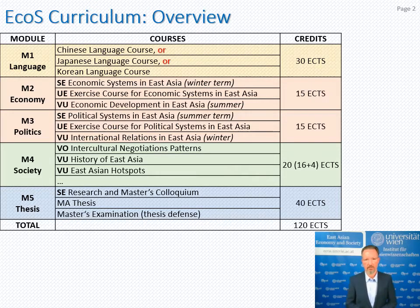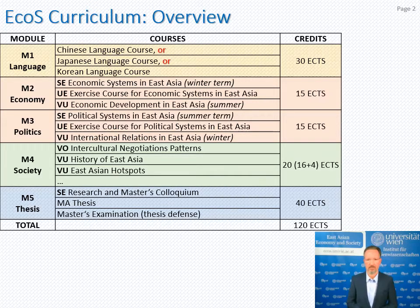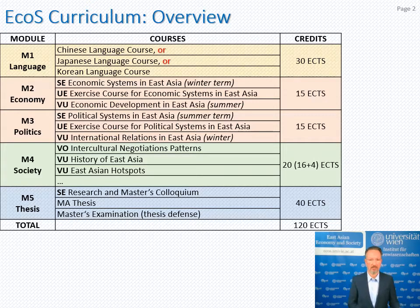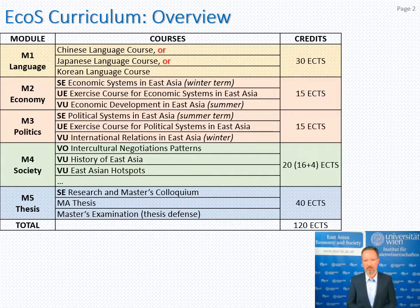Courses in M4 are not mandatory. You do have to select a certain number of courses to fulfill your ECTS credit requirements, but this is where we have a lot of flexibility — where you have a chance to follow your individual interests and select or deselect certain courses. And then obviously the final module is the master's thesis, consisting of the colloquium, preferably taken in the third or fourth semester, then the actual master's thesis, and then the master's exam or defense — all in all 120 ECTS credits.